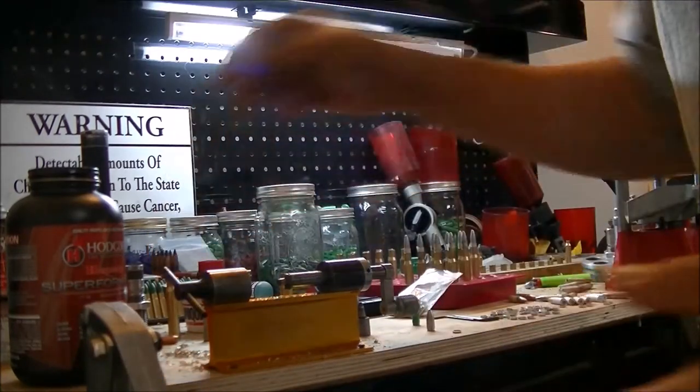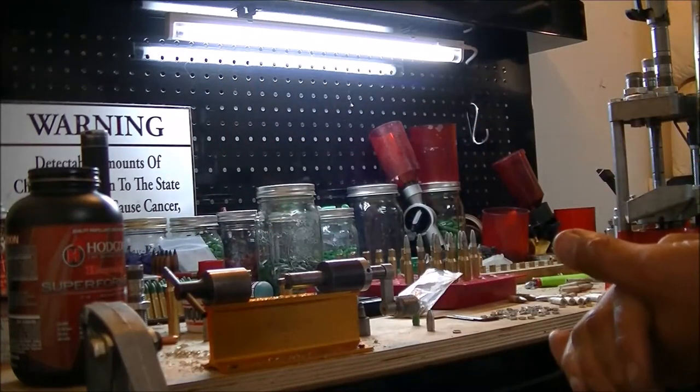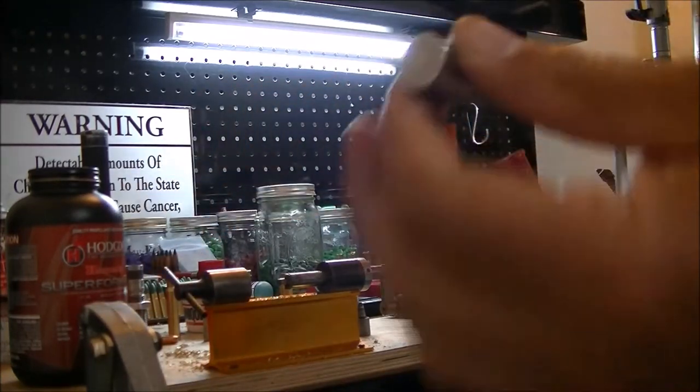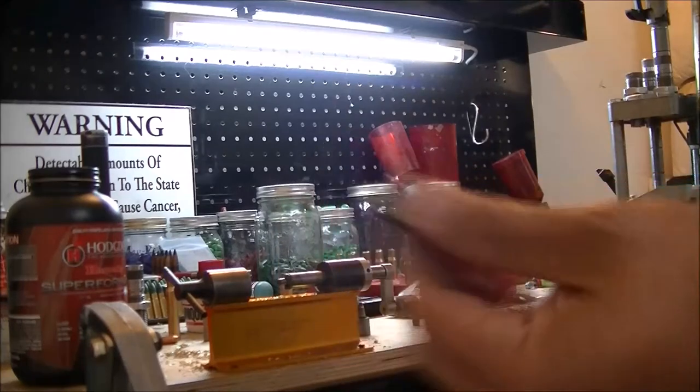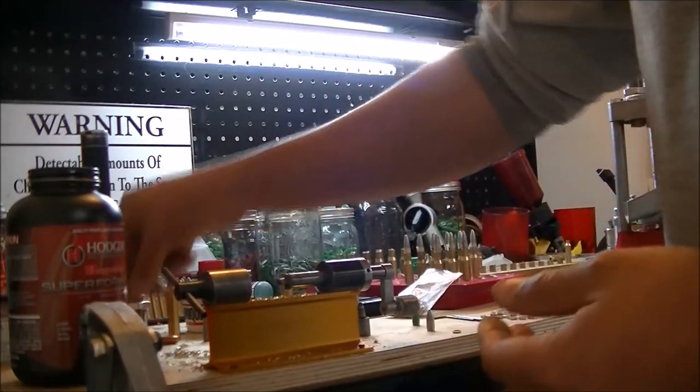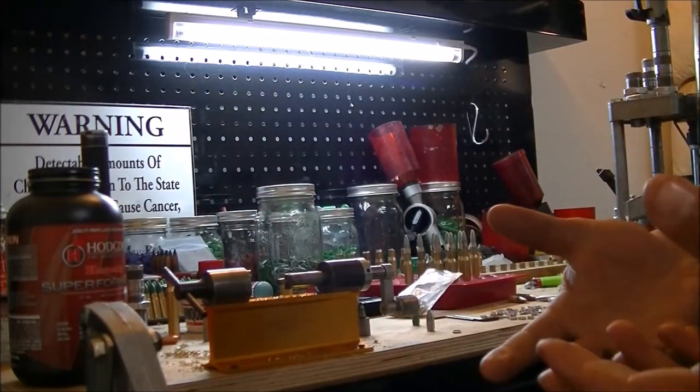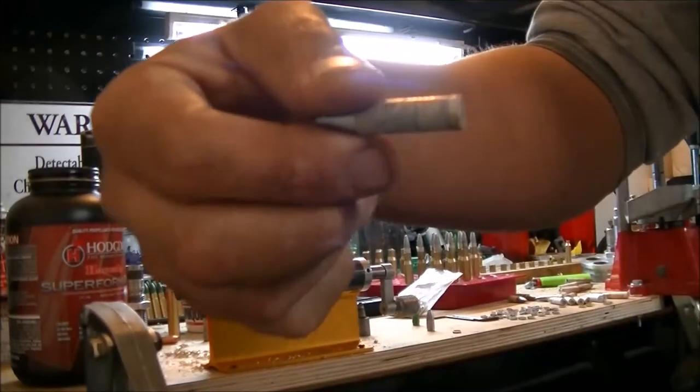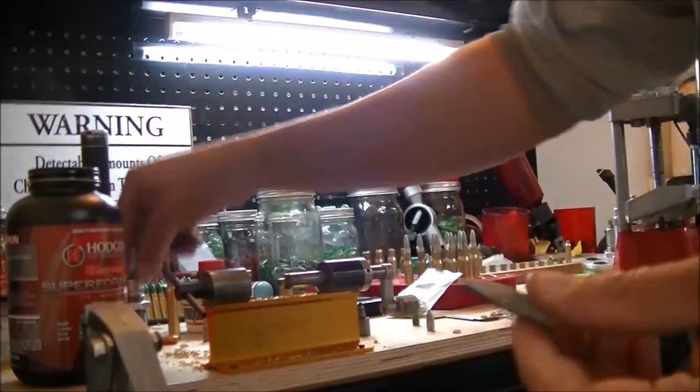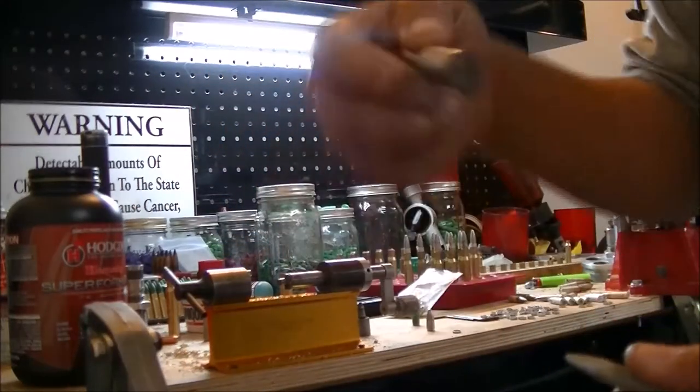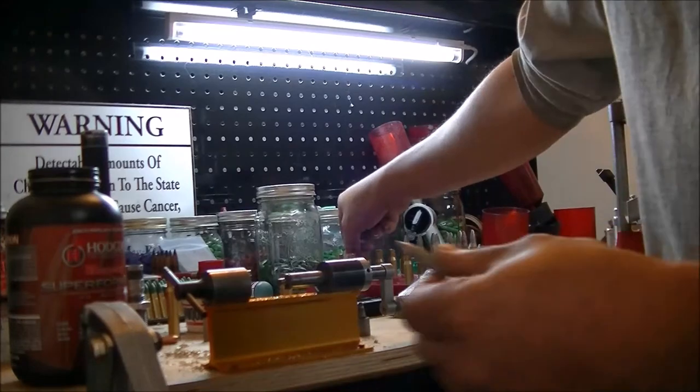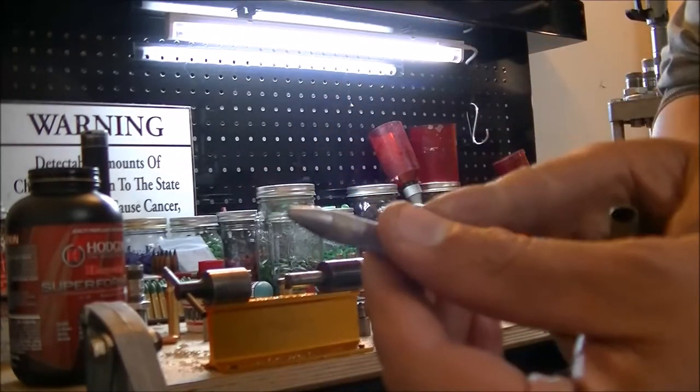Loading into a fire form brass without resizing at all is an option with a slight roll crimp. Another option would be using the NOE expander plug. I like to have about a thousandth under the bullet itself. So for instance, this is a 310, if I get an expander plug that is roughly 309 it will help seat the bullet down without damaging as it gets seated.